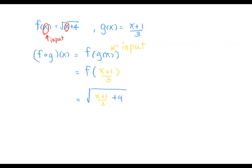Now we're going to simplify the radicand, which is the expression under the square root. So x plus 1 divided by 3 plus 4, the common denominator would be 3, so multiply 3 over 3. Therefore, we get the numerator as x plus 1 plus 12 divided by 3, which is x plus 13 divided by 3 as the radicand.